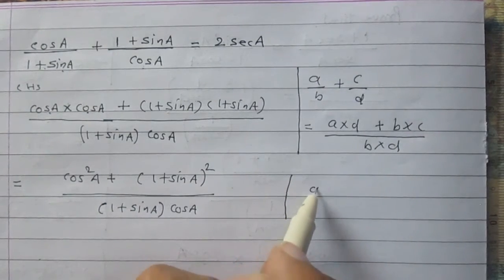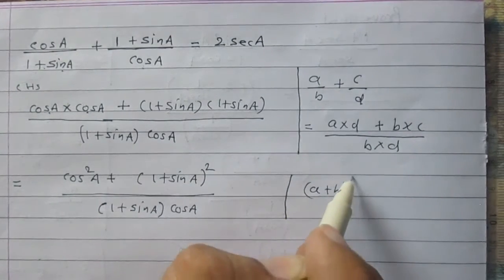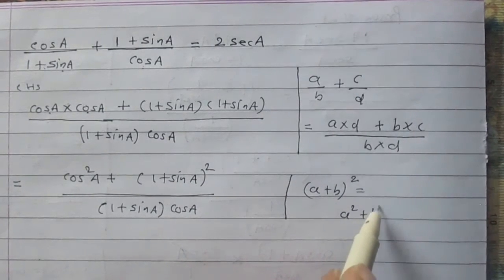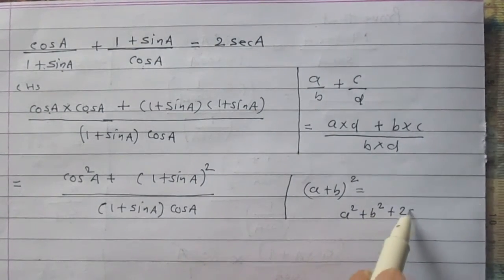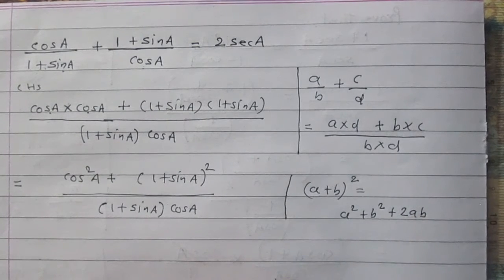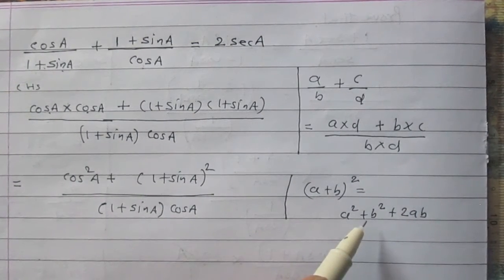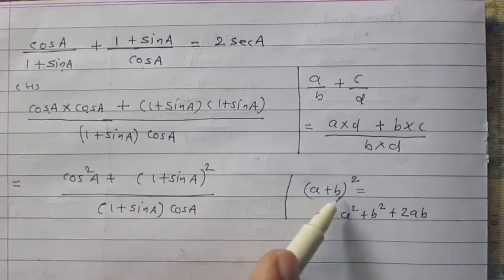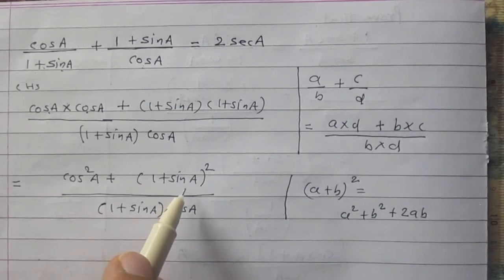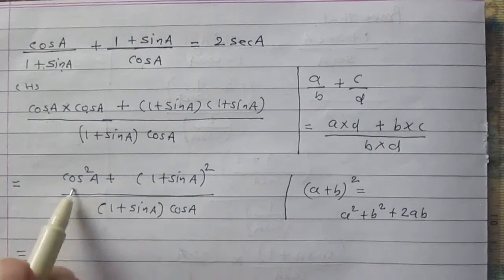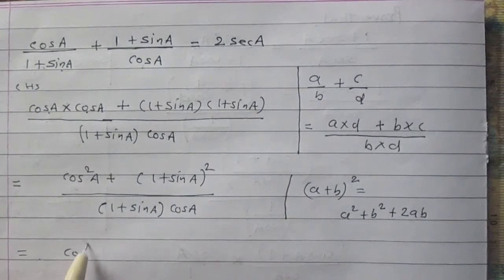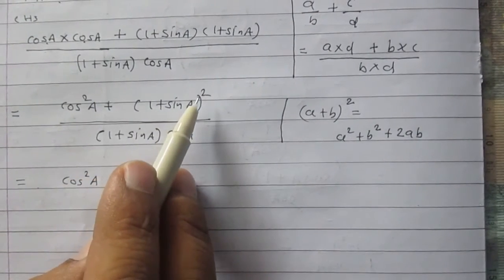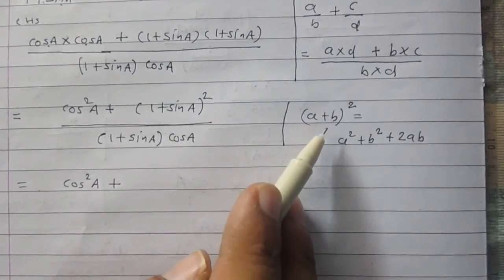We know that A plus B whole squared is A squared plus B squared plus twice of AB. So we can use this identity here, where A stands for 1 and B stands for sin A. So the numerator has cos squared A as it is, and 1 plus sin A whole squared will follow this identity.